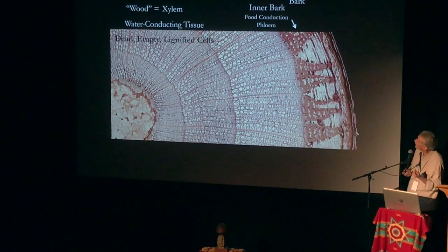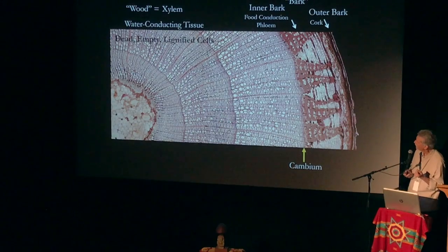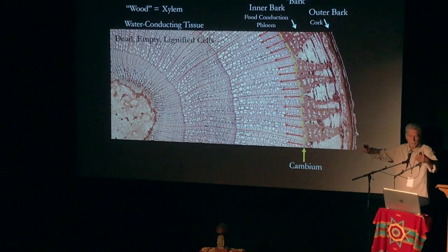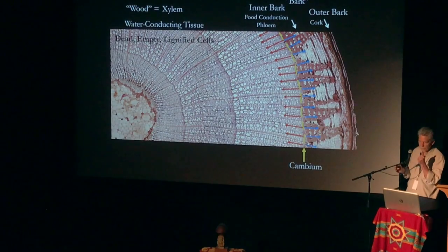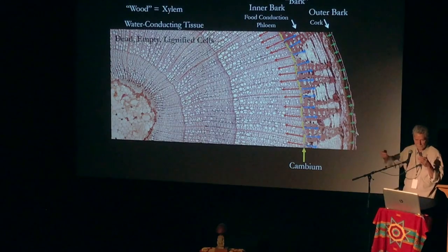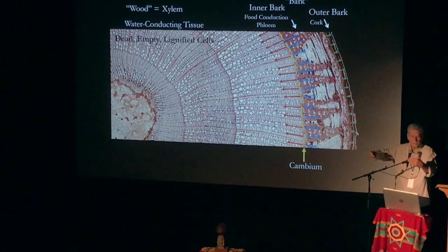The bark contains inner bark, and that's where the flow of food conduction goes on. In the outer bark, that's where the cork is for protection. The cambium layer is a growth area that produces secondary xylem, so that tree just keeps getting bigger and bigger with those rings of secondary xylem that transport water. It produces cells from the outside also, which is going to be more food conduction, and the tree's getting thicker there too. Even the cork cambium produces more cork, so the outer protective bark keeps getting thicker and thicker.